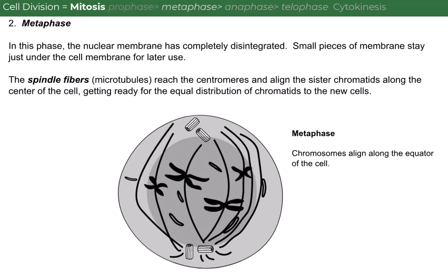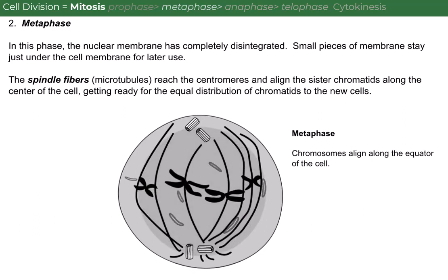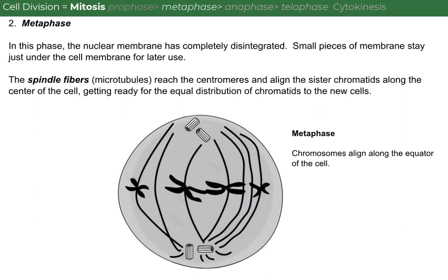Metaphase. In this phase, the nuclear membrane has completely disintegrated. Small pieces of membrane stay just under the cell membrane for later use. The spindle fibers reach the centromeres and align the sister chromatids along the center of the cell, getting ready for the equal distribution of chromatids to the new cells.